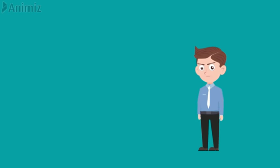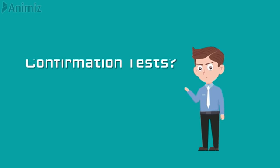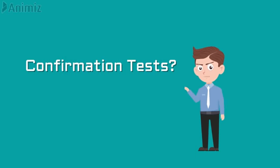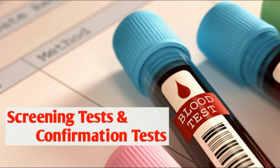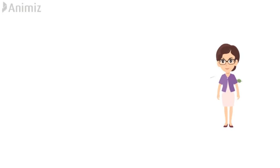Now let's discuss the confirmatory test. Confirmatory tests are required to confirm the analysis and cost more than the simpler presumptive screening tests. In ordinary laboratories, we cannot go for the confirmatory test directly because these tests are much higher cost than the normal screening tests. That's why we first do the screening test, and after that we go for the confirmatory test. Commonly in laboratories, we are using TPPA — Treponema pallidum Particle Agglutination test — and TPHA — Treponema pallidum Haemagglutination test — for the confirmation of syphilis infections.